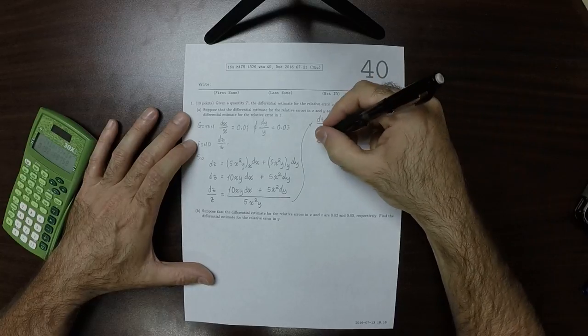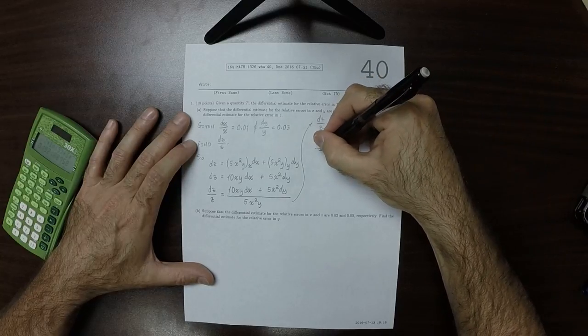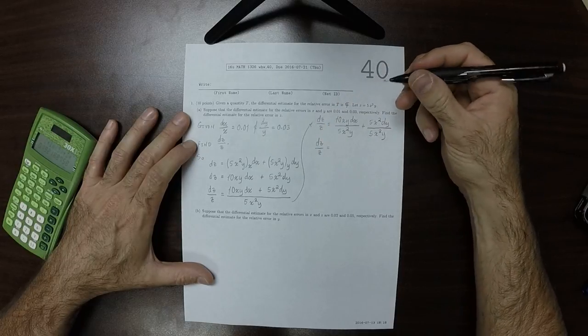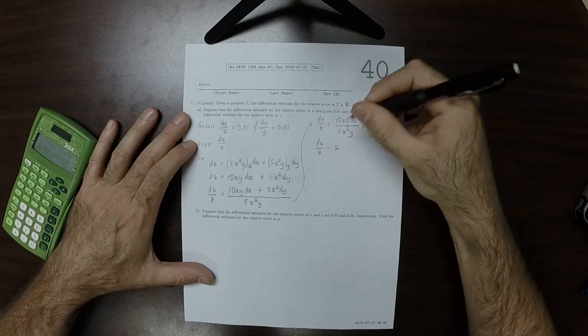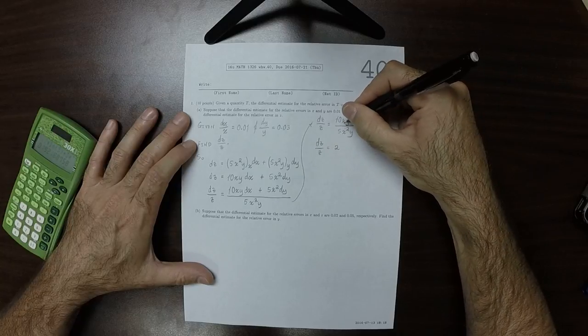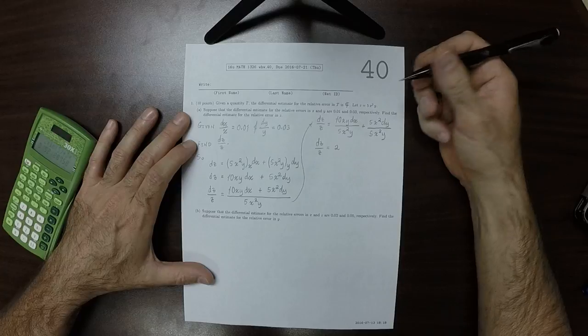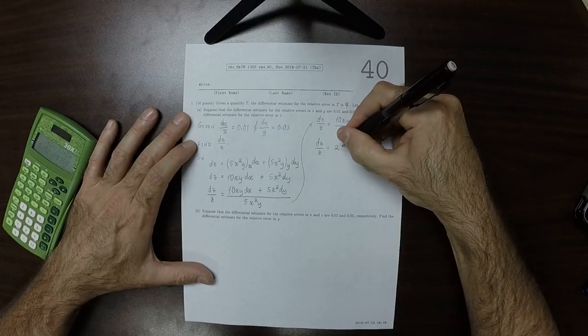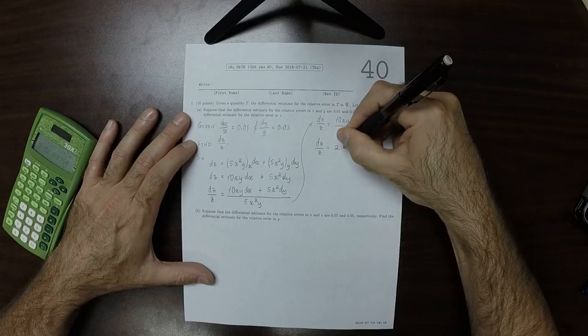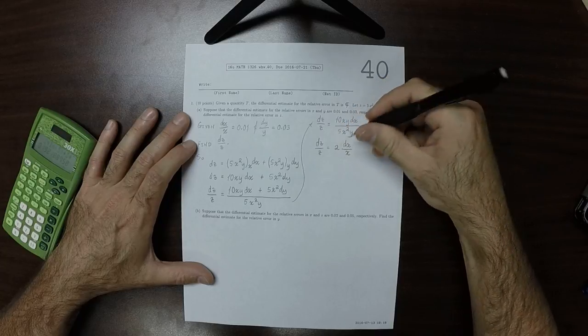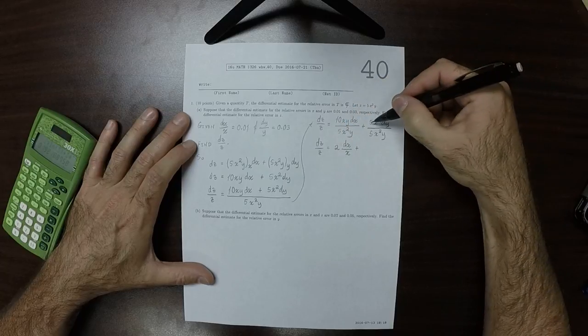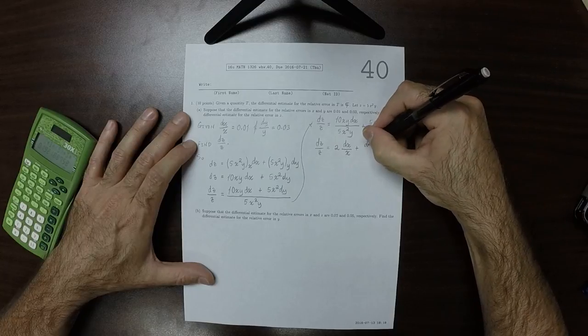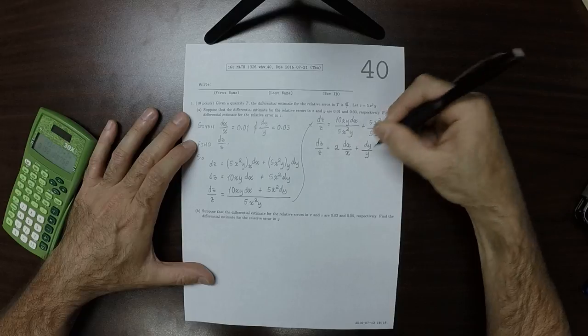There's a lot of cancellations. So dz over z: 10 over 5, that's 2. x over x squared, that's an x in the denominator, and y over y, those cancel. So this is 2 dx over x plus 5 over 5, those cancel. x squared over x squared, those cancel. So dy over y.